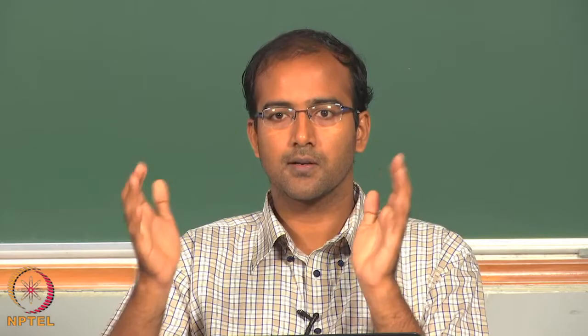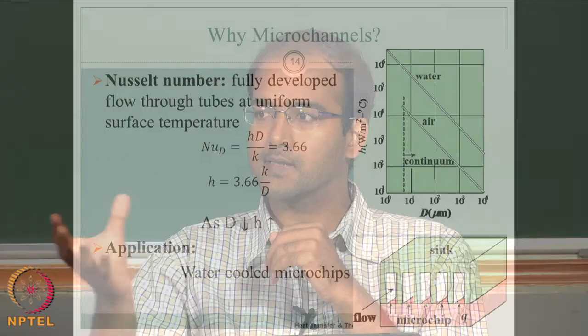Nowadays people are looking at using micro channels for many applications, especially for cooling. We have so far focused on applying continuum or subcontinuum models depending on Knudsen number. Now we also look at convection aspects at micron scale and above. One typical example is the micro channel, which is gaining a lot of importance — not just as a device exhibiting microscale phenomena, but more importantly as a tool for cooling electronic circuits.